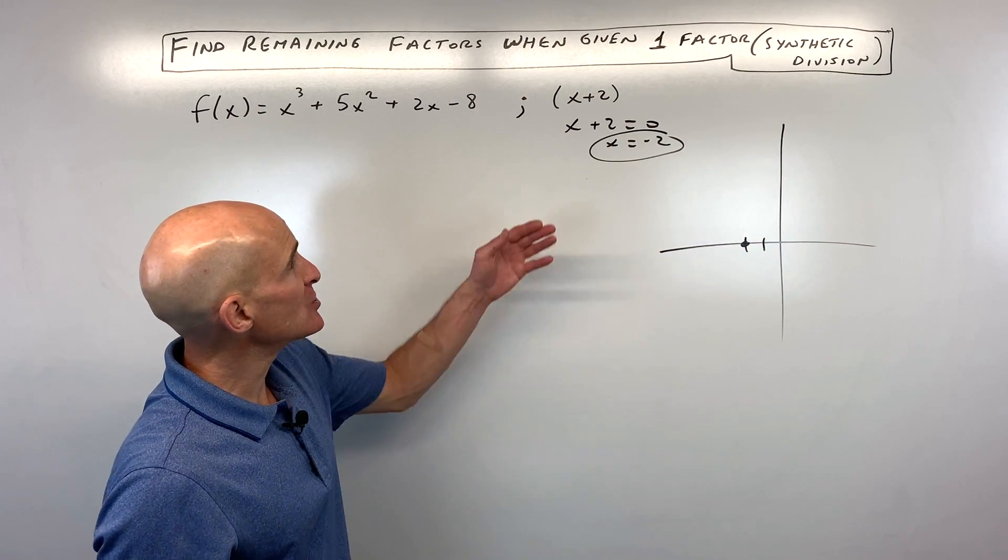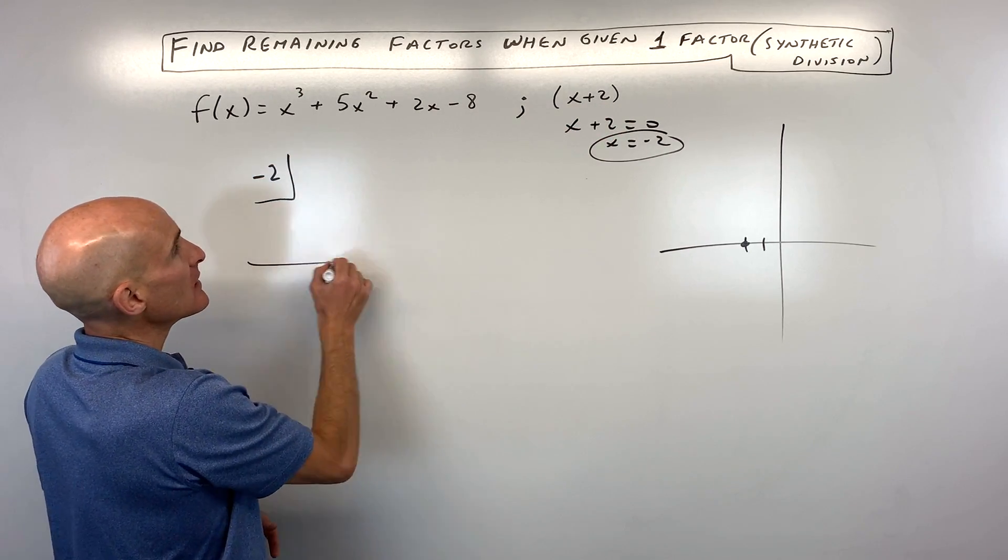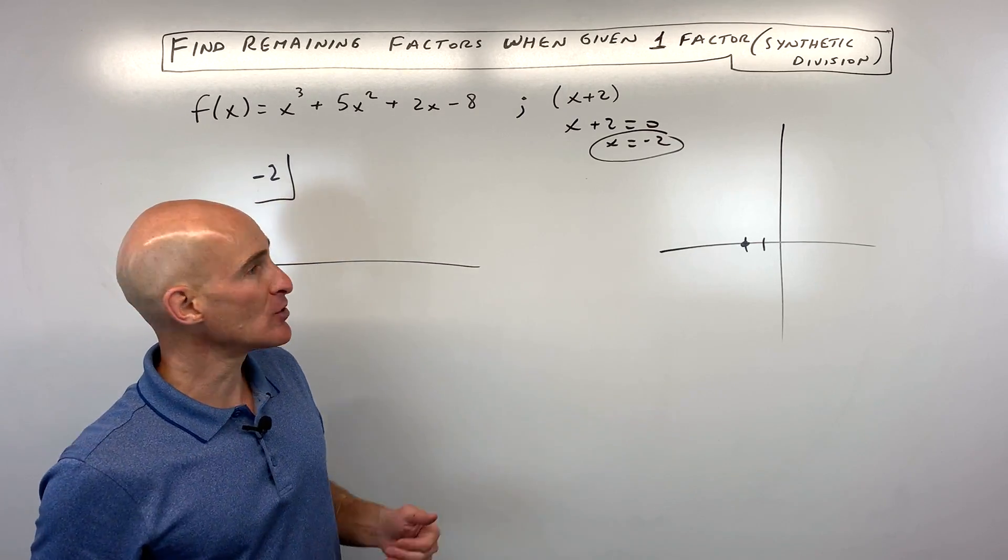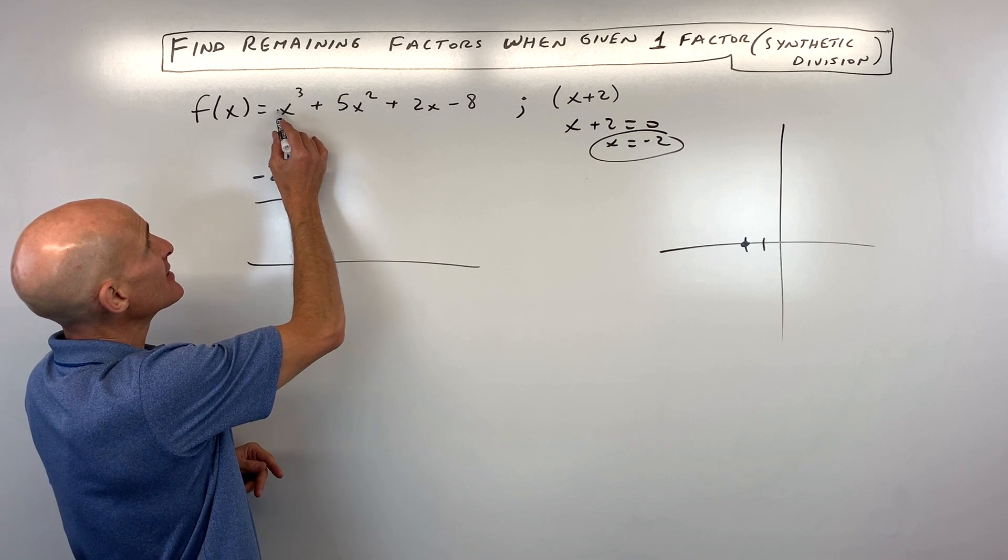Now, when you do the synthetic division, if your factor is x + 2, over here you're going to put negative 2. If it was x - 2, then you would put positive 2. So it's like the opposite sign, or you can think of it as putting the zero in here.